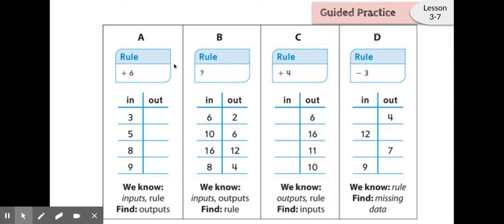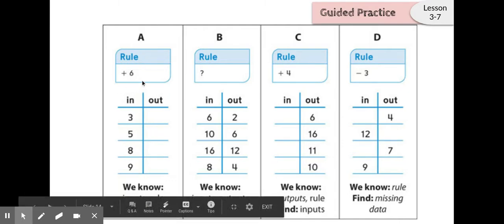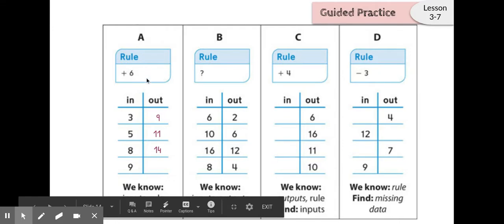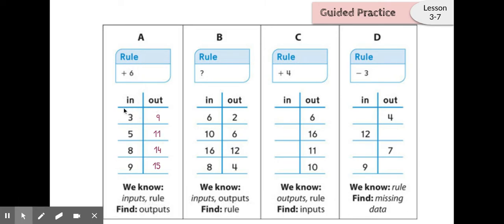Here are several examples of function machines or tables. Sometimes we know all of the inputs and the rule, and we simply have to figure out what all of the outputs are. To do this, I just apply the rule: three plus six equals nine, five plus six equals eleven, eight plus six equals fourteen, and nine plus six equals fifteen. This one is fairly straightforward because we just apply the rule to the input numbers.